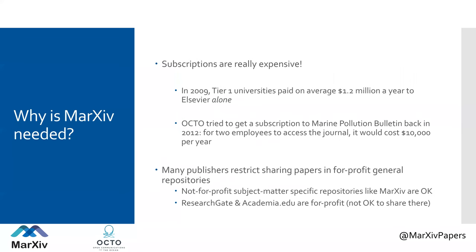Subscriptions are really expensive even if you're at universities that have them. In 2009 alone, Tier 1 universities paid on average $1.2 million a year each to Elsevier alone — and that's just one publisher. We tried to get a subscription to Marine Pollution Bulletin once just for two employees back in 2010, and that would have cost us $10,000 per year — $5,000 per employee per year. You can see how this scales up to an average of $1.2 million a year just to one publisher.